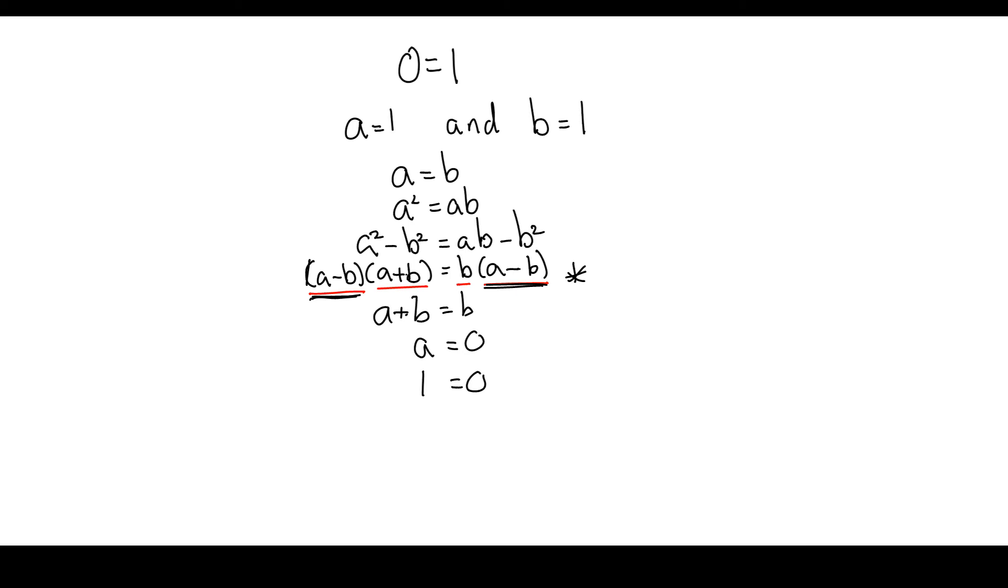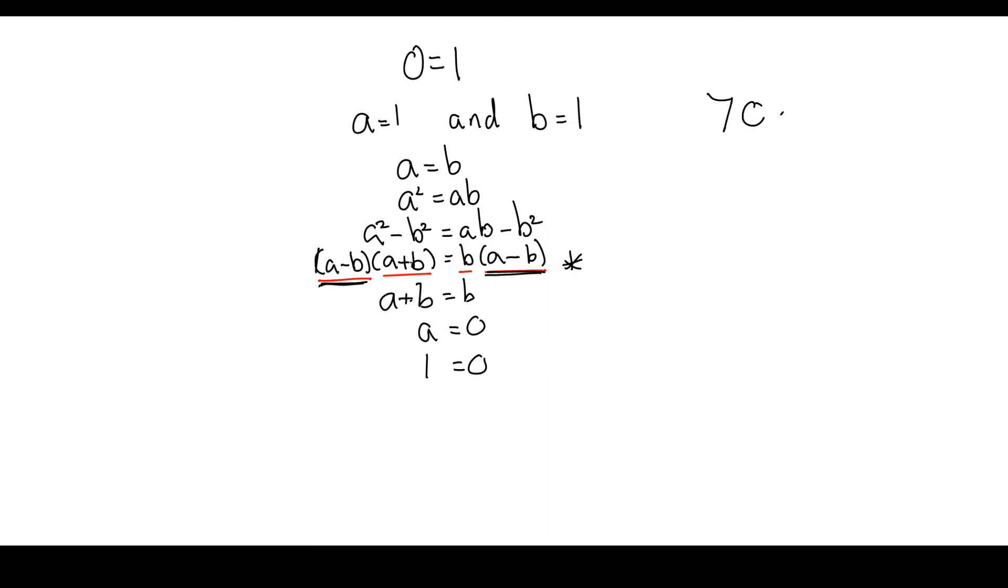70 multiplied by 0 equals 0 multiplied by 0. Well, it's true, and then I can cancel out the 0s. And I end up with 70 equals 0, which is not true, of course, but I divided by 0, that's where my mistake was.